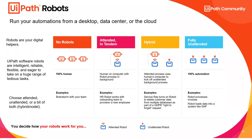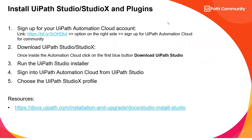Only when that person approves does the robot proceed. So robots can work in a hybrid mode alongside humans. Don't think that once you automate, you can't interact — RPA has the capability to interact in hybrid mode. There are attended robots (where you provide input to the robot on your machine), unattended robots, and hybrid robots. UiPath has covered all of these.